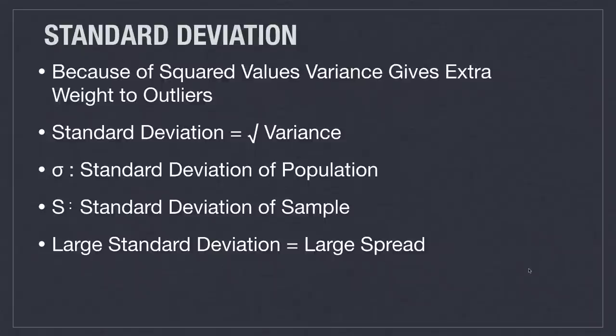Because we square values with variance, that gives some extra weight to outliers. For this reason, we find the square root of the variance to find what is called the standard deviation — it is simply the square root of the variance. When the standard deviation is large, the numbers are more spread out. When the standard deviation is smaller, the results or samples are closer to the mean.